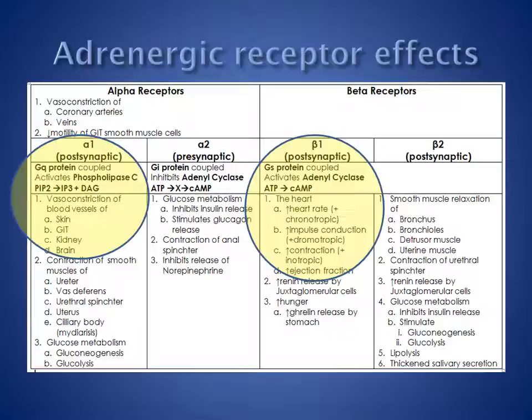Beta-1 receptors are found in the heart. Stimulation causes an increase in heart rate, increased myocardial contractility, and increased cardiac impulse conduction velocity. Stimulation of adrenergic receptors has widespread effects around the body, including pulmonary vascular smooth muscle relaxation and effects on glucose metabolism, resulting in an increase in blood glucose.